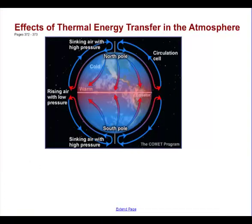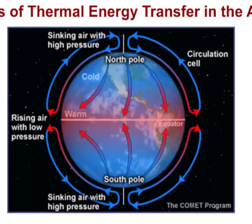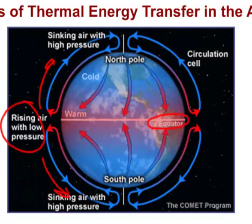Now here's where things get interesting. Remember we're talking about a planet — a spherical object that is spinning. At the equator, where we're getting a lot of solar radiation, air rises. That air travels north or south, where it cools off, sinks, and comes back down to the equator to replace the air that was lifted from the warm portions of the equator.